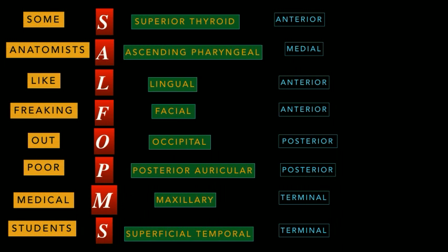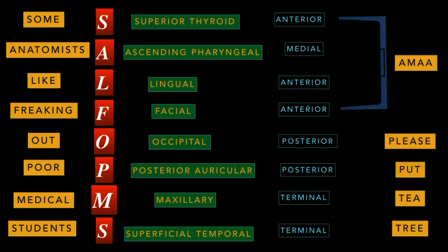The mnemonic for remembering the branch locations is: 'Amma Please Put Tea Tree.' Here, A-M-A-A stands for Anterior, Medial, Anterior, and Anterior; the double P stands for Posterior and Posterior; and the double T stands for Terminal and Terminal. I hope this video was beneficial for you.